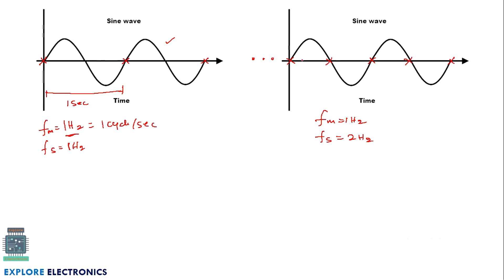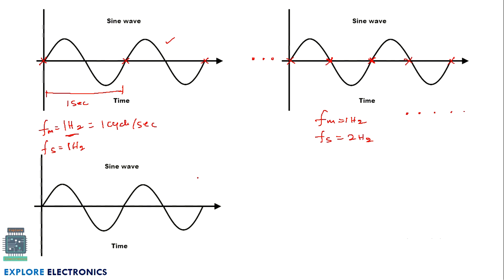So I am going to get two more signals in between. Again I am going to get values — constant values — and these are zeros again.